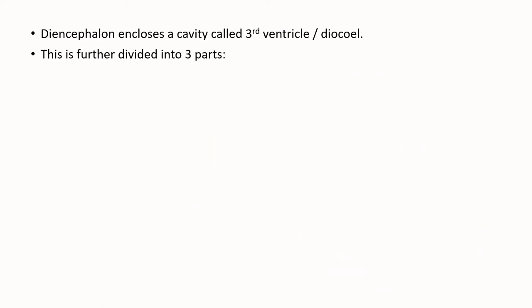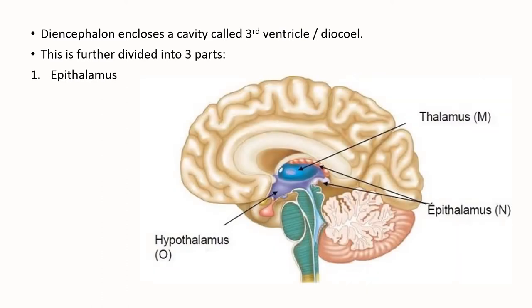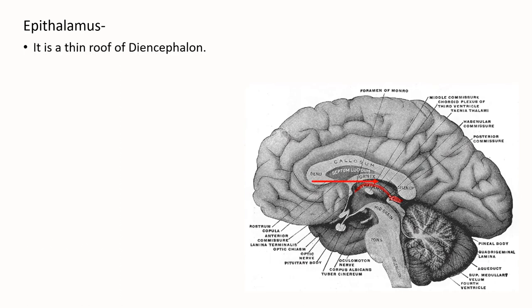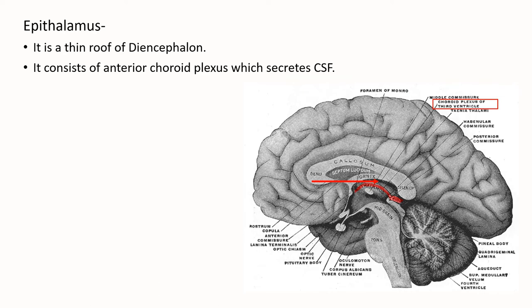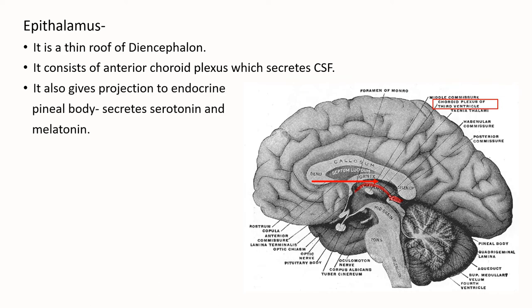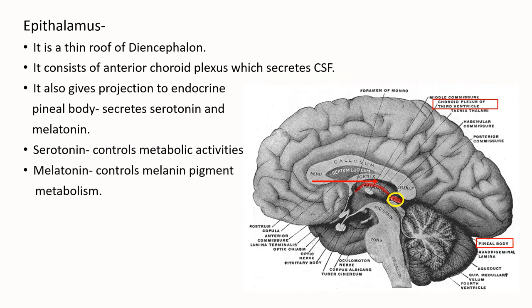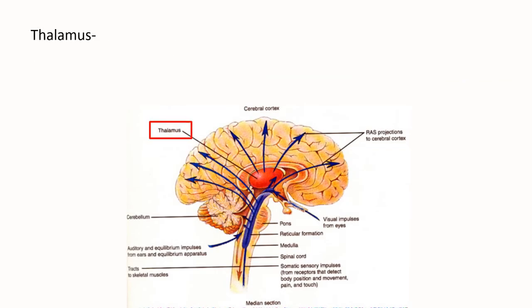Diencephalon encloses one such cavity known as the third ventricle, or the diachole. Diencephalon is further divided into three parts: the epithalamus, thalamus, and the hypothalamus. Epithalamus is the thin roof of diencephalon. It consists of the anterior choroid plexus, which secretes CSF. It also gives projection to the endocrine pineal body, which secretes serotonin and melatonin. While serotonin controls metabolic activities, melatonin controls melanin pigment metabolism.